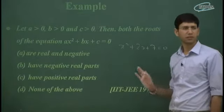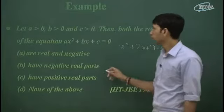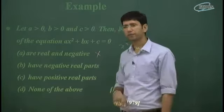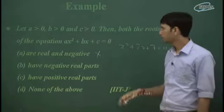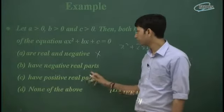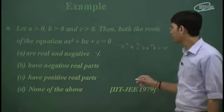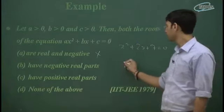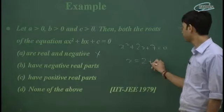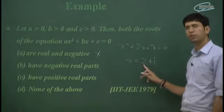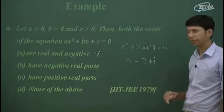So it is wrong. If real part is negative, then this option is wrong. Real part is what we call real part. So what is the real part? Now, I have 2 plus iota. So here 2 is the real part and iota is the imaginary part.